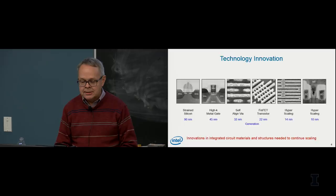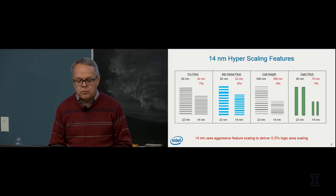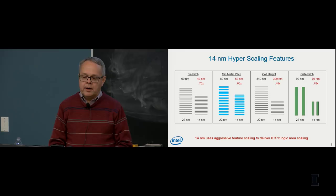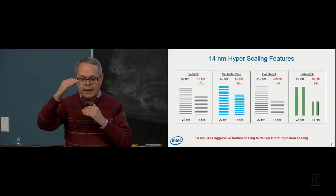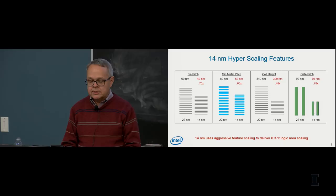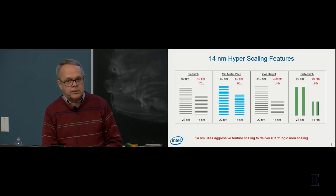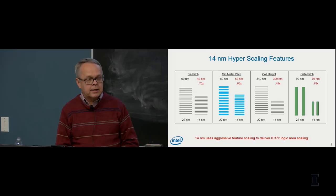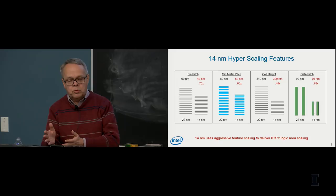On our 14 nanometer technology we scaled the fin pitch from 60 to 42 nanometers — a pretty normal 0.7x scaling — but we did unusually good interconnect scaling from 80 to 52 nanometers, which was 0.65x. The logic cell height scaled by 0.48x and gate pitch scaled from 90 to 70 nanometers. This combination provided not just the normal 0.5x area scaling but closer to 0.37x — a bigger step than normal from the 22 nanometer generation. We describe that as hyperscaling: achieving better than normal area scaling.